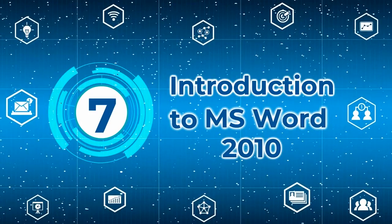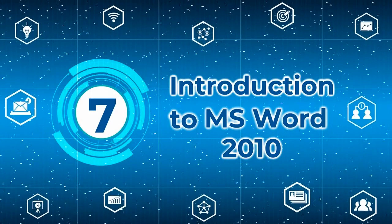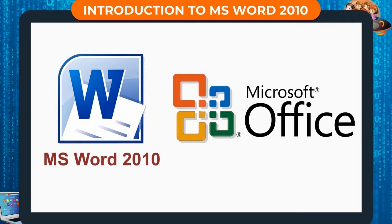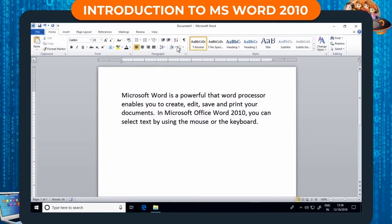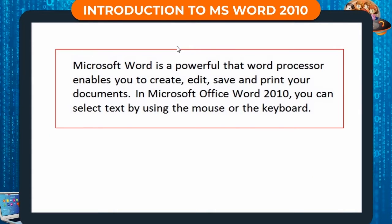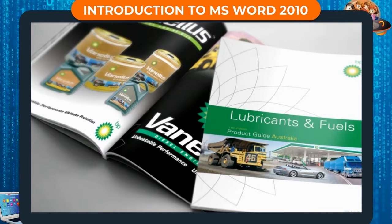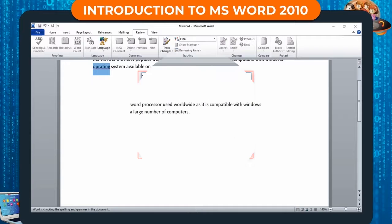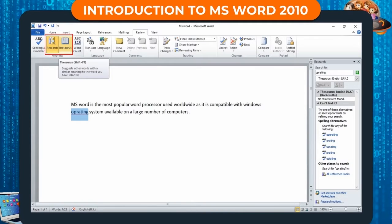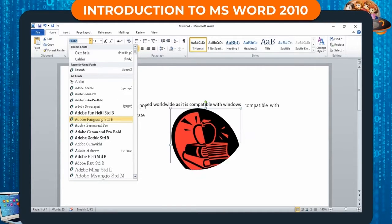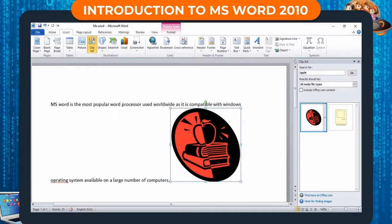Introduction to MS Word 2010. MS Word is a word processing software which comes as a part of Microsoft Office 2010 package. It is used to create text documents such as letters, project reports, catalogs, etc. It has numerous tools such as grammar, spellcheck and thesaurus to make the document accurate. It also offers various font styles to make the document appealing and other graphics to make it more expressive and attractive.